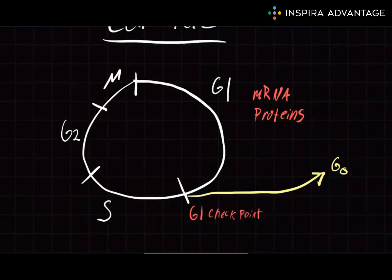The G1 checkpoint is particularly important for the MCAT because it is the critical point where the cell decides whether to divide or not divide. In addition to checking the cell's mRNA and protein content, it also checks for DNA damage. And if there is any DNA damage, then the cell won't proceed to the next phase.